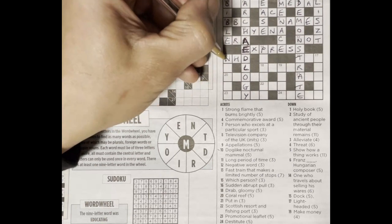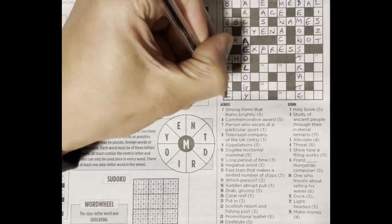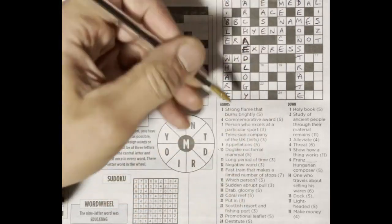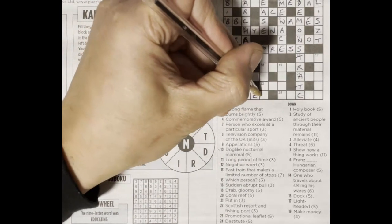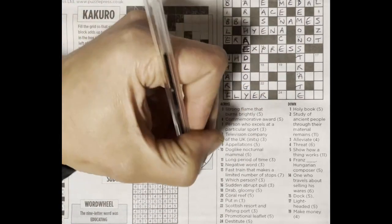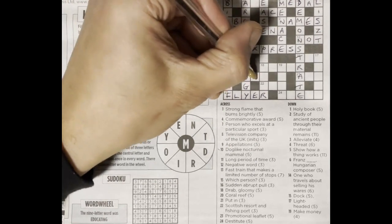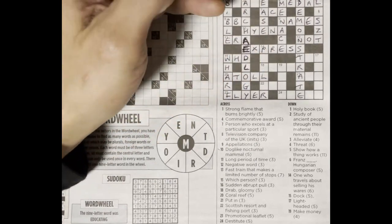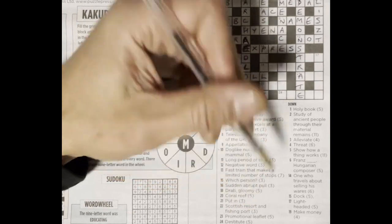Canary Wharf is H-A-R-F. Twenty-three across, promotional leaflet, flyer. Twenty across, coral reef, atoll. Twenty-two across, Scottish resort and fishing port.